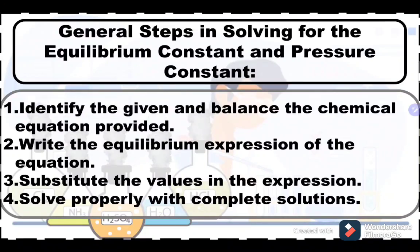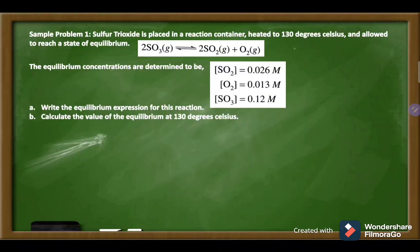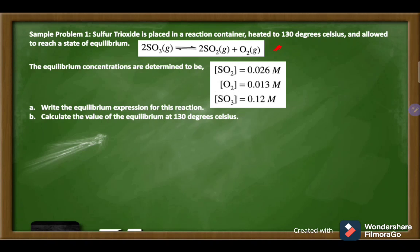Sample problem number one: Sulfur trioxide is placed in a reaction container heated to 130 degrees Celsius and allowed to reach a state of equilibrium. The equilibrium concentrations are: SO2 = 0.26 M, O2 = 0.013 M, and SO3 = 0.12 M. Letter A: write the equilibrium expression for this reaction. Letter B: calculate the value of the equilibrium constant at 130 degrees Celsius.